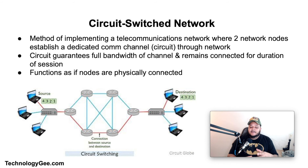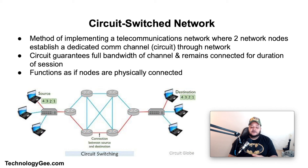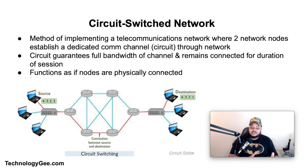Circuit switching is a method of implementing a telecommunications network in which two network nodes establish a dedicated communications channel — also known as a circuit — through the network before they may communicate. The circuit guarantees the full bandwidth of the channel and remains connected for the duration of the session, functioning as if the nodes were physically connected. Circuit switching originated in analog telephone networks, creating a dedicated circuit between two telephones for the duration of a call. It contrasts with packet switching, in which trunk lines carry data between many nodes in the form of packets without dedicated circuits.